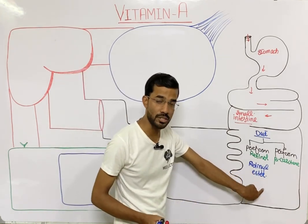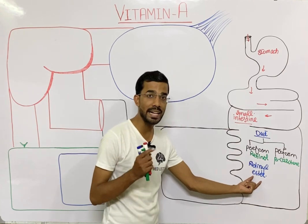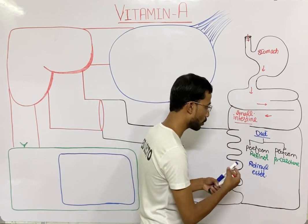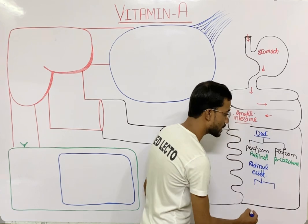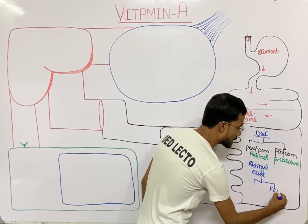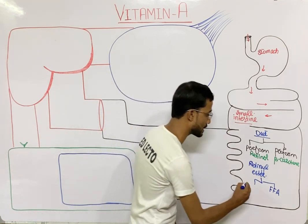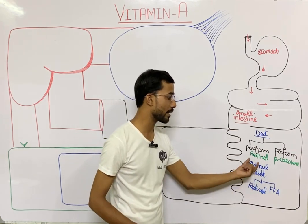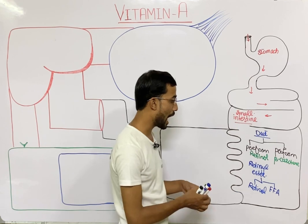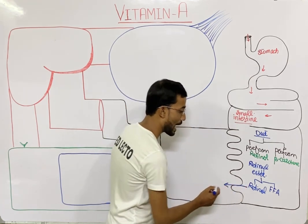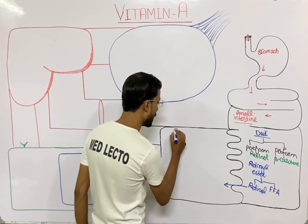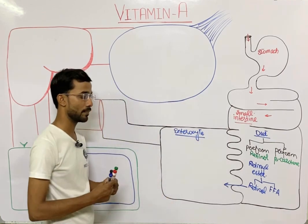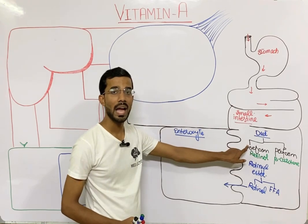In the small intestine, there is breakdown of the retinol ester, which forms two things: free fatty acids and retinol. The retinol is released from the retinol ester and then enters into the enterocytes, the cells of the small intestine.